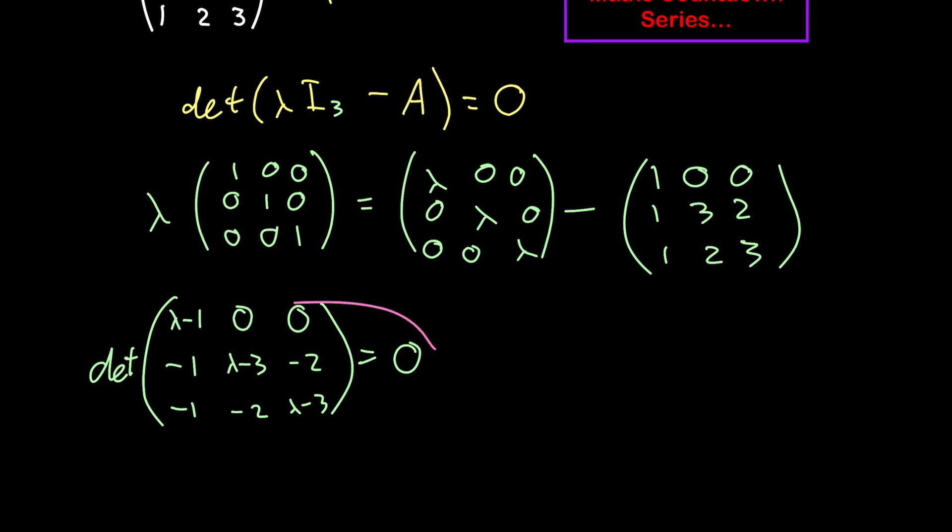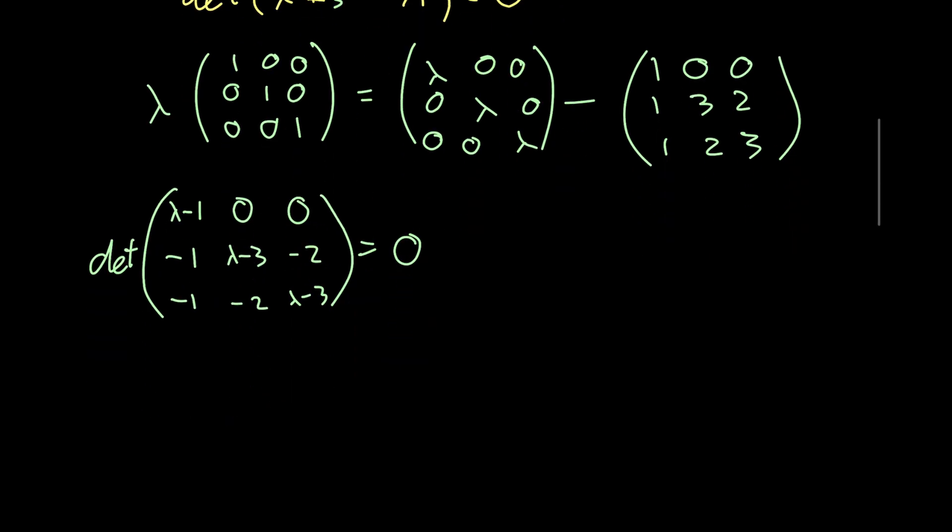How do we solve the determinant of that matrix? It's best to go along this first row here. Let me show you why. Our determinant will be lambda minus 1 times, and we delete that row, that column in that row. Then we multiply it by the determinant of the remaining matrix, which is lambda minus 3, negative 2, negative 2, and lambda minus 3.